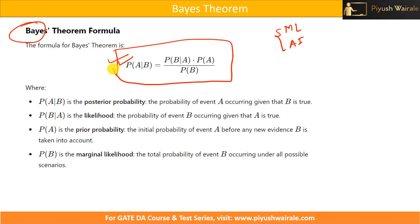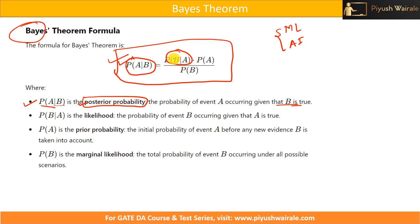This particular probability — A given B — is known as posterior probability. Posterior probability is the probability of event A occurring given that B is true. Now, the probability of B given A is called likelihood. Likelihood is the probability of event B occurring given that A is true. The key difference is: we are finding the value of the posterior probability, whereas the value of the likelihood is already known.